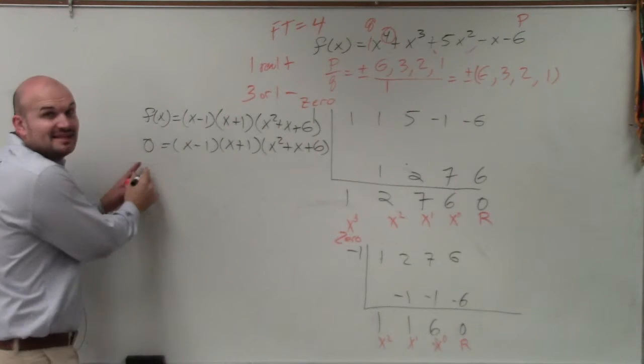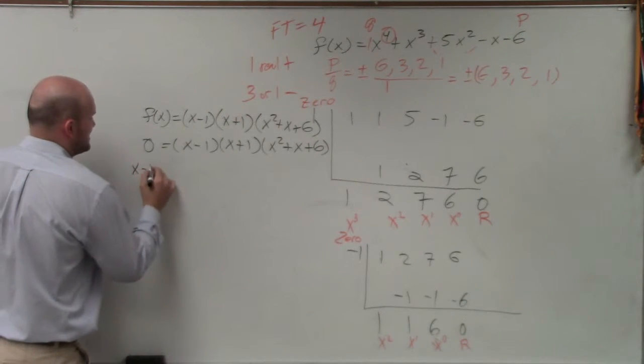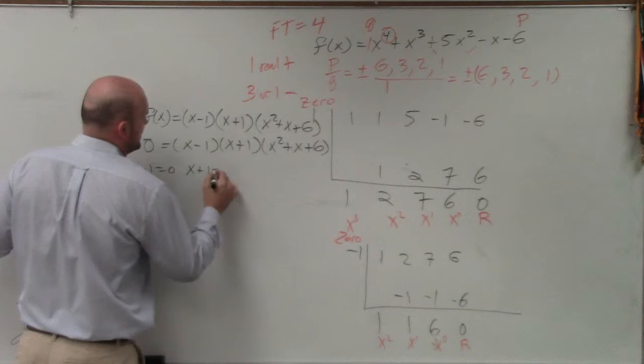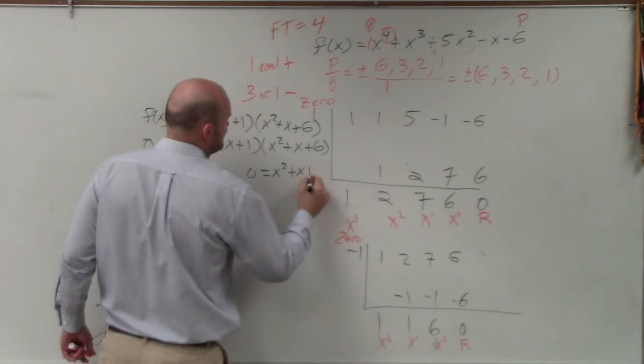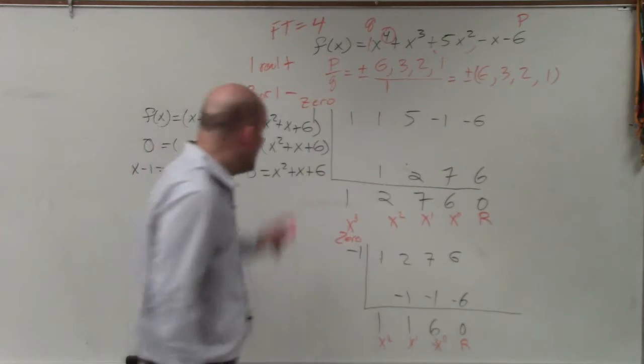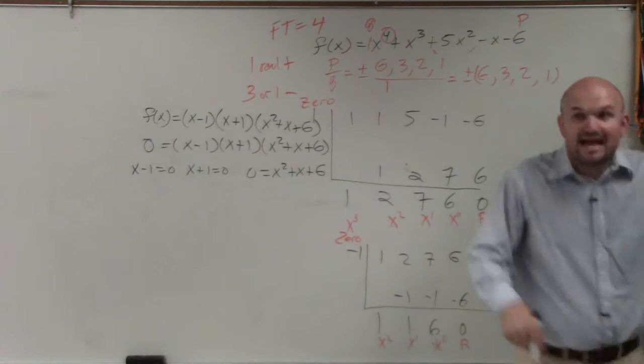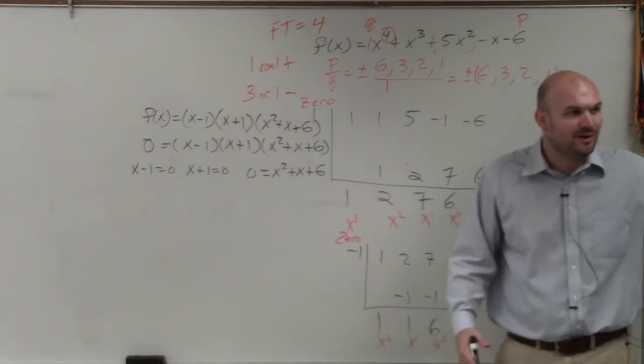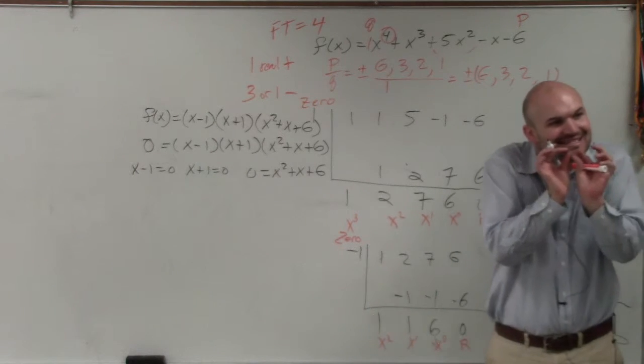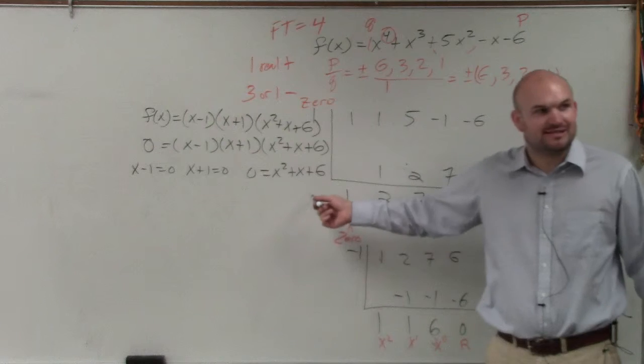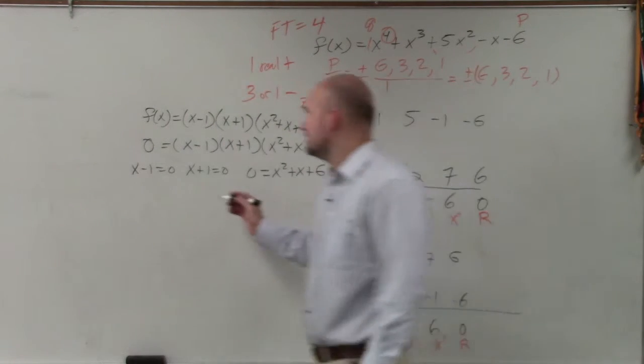So you would set these all equal to 0. x minus 1 equals 0. x plus 1 equals 0. And 0 equals x squared plus x plus 6. You can't factor that. If it's non-factorable, then you have to do what? Quadratic formula. Guess what? The quadratic formula is a little snippet into the problems you guys have to do now, OK?